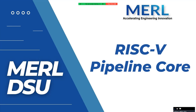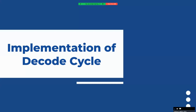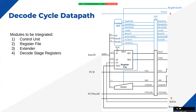Welcome to the third lecture on designing and implementing a pipeline. In the previous lecture, we covered how to design the fetch cycle for the pipeline version. In today's video, we are going to implement the decode cycle of the pipeline version. As our normal routine, we will first discuss a little bit of theory and then move towards the coding part.